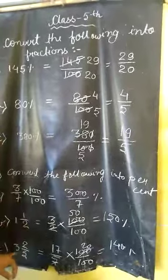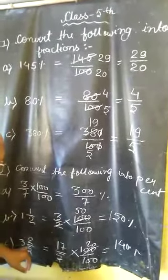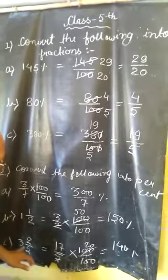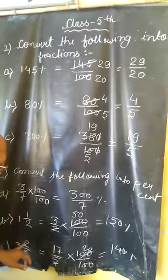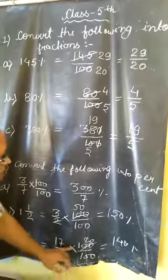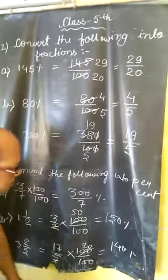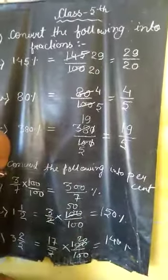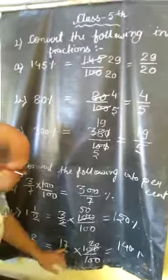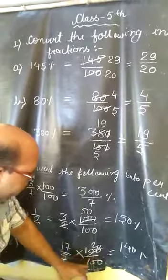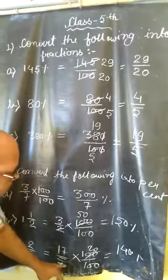Question 3: 3 and 2 upon 5. To make this mixed fraction into an improper fraction, 3 times 5 is 15, plus 2 equals 17 upon 5. We multiply both sides by 100. After multiplying by 100, we get 17 upon 5 into 100. After minimizing, when we divide 100 by 5, we get 20.